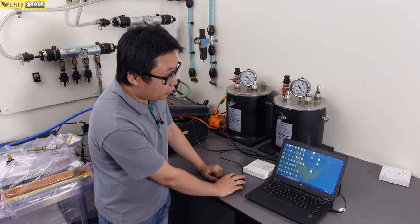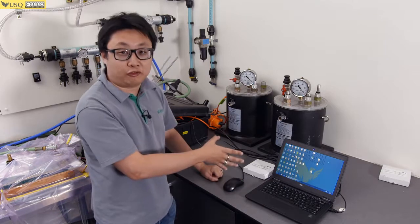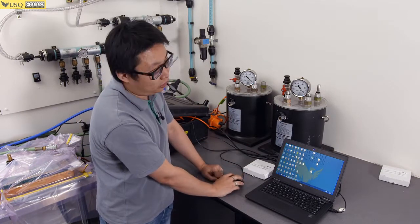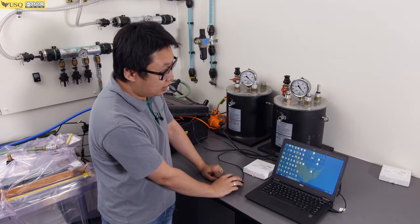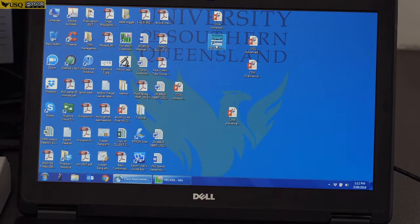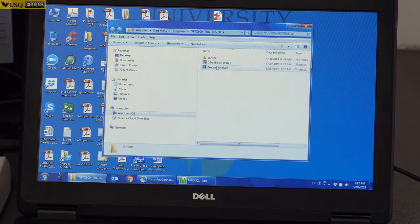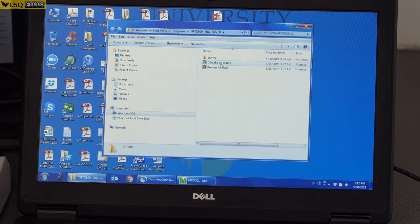Now we're going to look at the software and learn how to set up a measurement. First of all, on the desktop, you will see a NETCH folder. Double click the folder, you will see two icons.